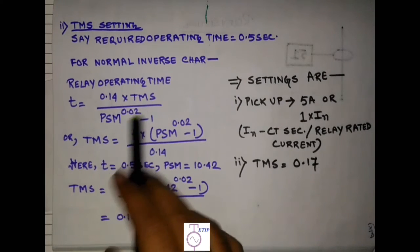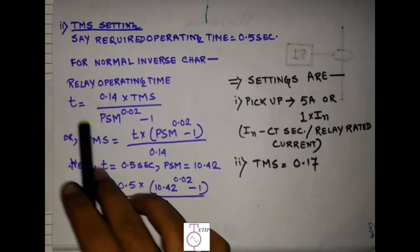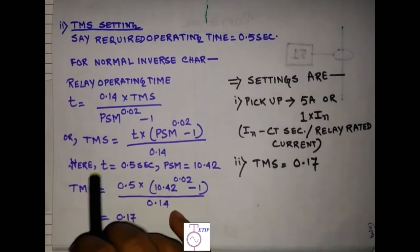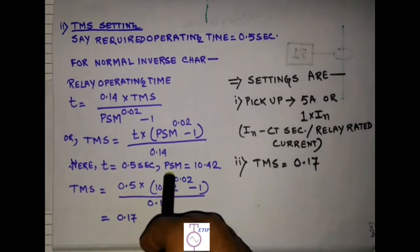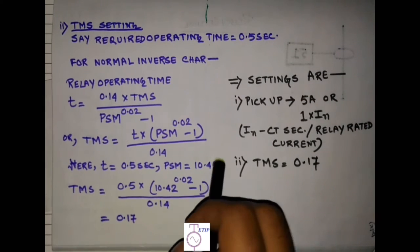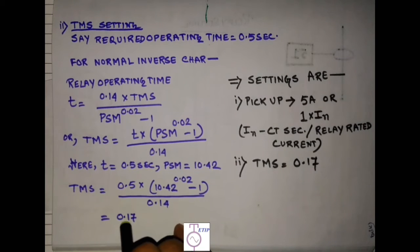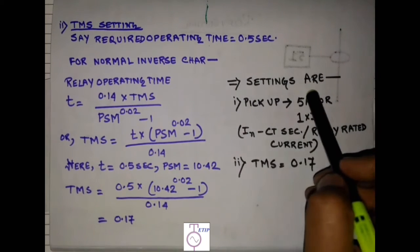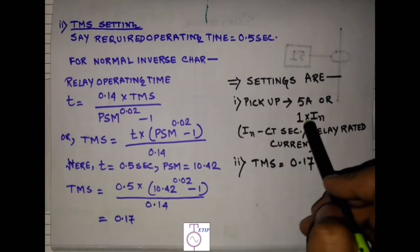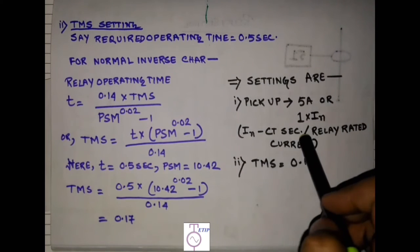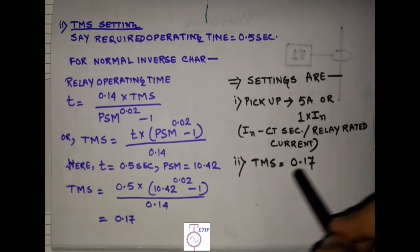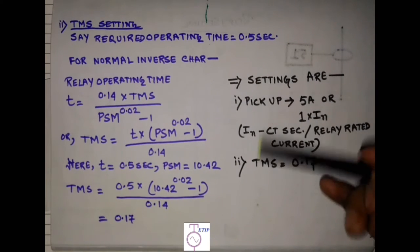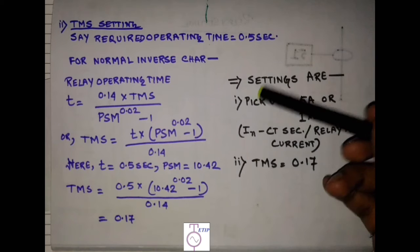From here we can derive TMS = t × (PSM^0.02 - 1) / 0.14. So our t is 0.5 second and PSM is equal to 10.42 as we have calculated earlier. So TMS will be 0.17. So our settings will be: pickup is 5 ampere or 1 into CT secondary or relay rated current, and TMS is 0.17. So these will be the two set points of the IDMT relay.